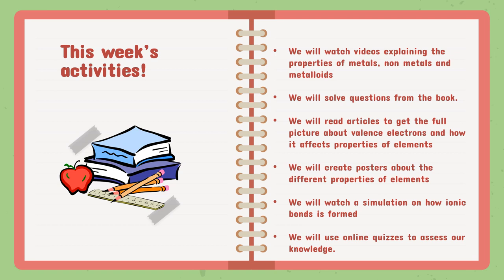For this week's activities, we will watch videos explaining the properties of metals, non-metals, and metalloids — covering every different property according to their valence electrons. We will also solve questions from the book, read articles to get the full picture about valence electrons and how they affect the properties of elements, and create posters about the different properties of elements, working in groups to discuss chemical and physical properties of metals, non-metals, and metalloids.